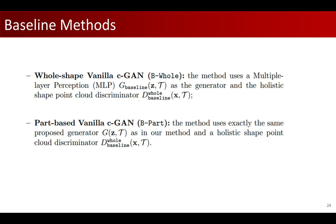We compare our method to two conditional GAN baseline methods, whole-shaped vanilla CGAN B-whole and the part-based vanilla CGAN B-part. The B-whole baseline performs holistic 3D shape generation without explicitly considering shape parts. It employs a simple multilayer perceptron for the generator and a PointNet as a holistic shape discriminator. Both generator and discriminator are conditioned on symbolic part-tree root node structural context.